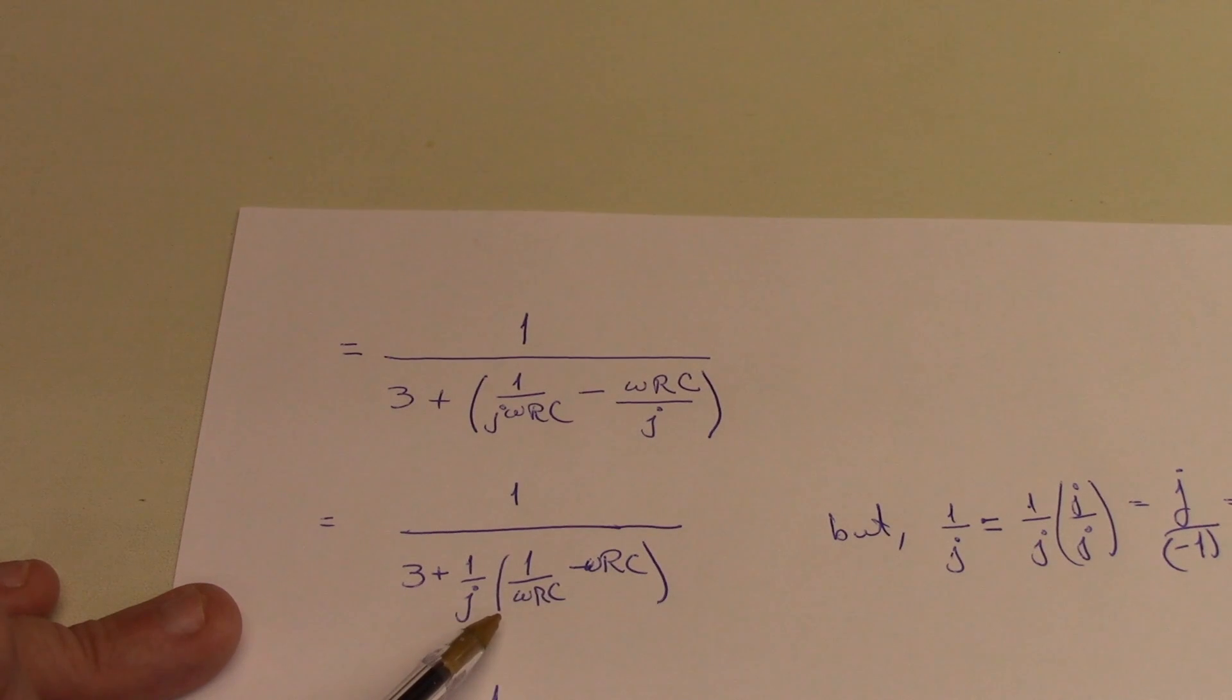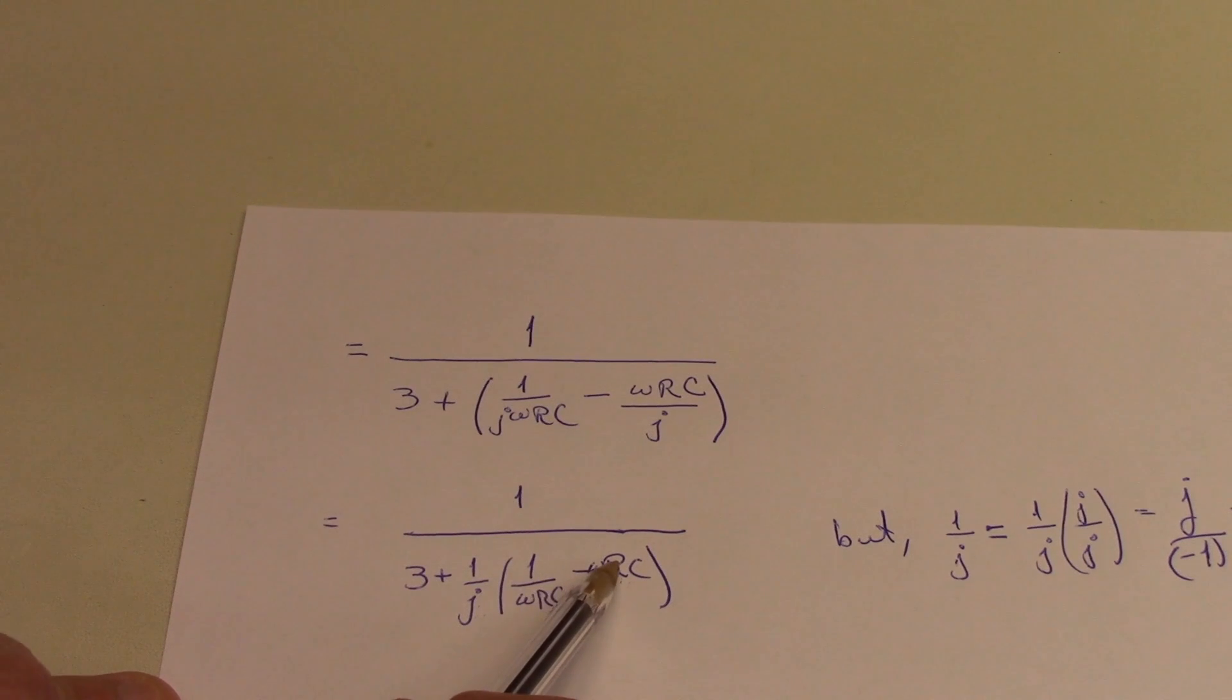Now, I could actually stop here and get to the expression for the resonant frequency if I demand that this imaginary part of the denominator be 0. Then I get this equal to that expression and I find out that omega is 1 over rc.